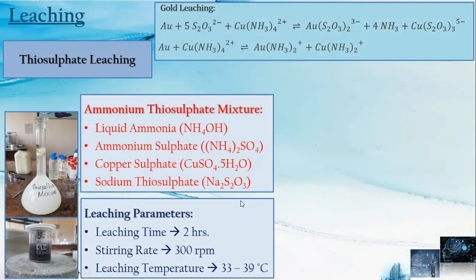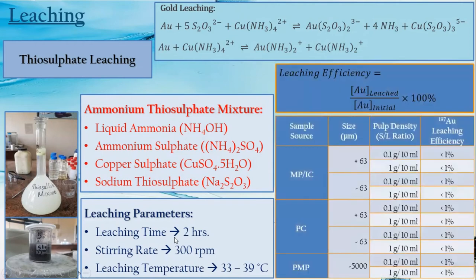Gold leaching was done using an ammonium thiosulfate mixture. The final mixture consisted of 1 M ammonium thiosulfate, 0.5 M ammonium hydroxide, 0.25 M ammonium sulfate, and 10 mM copper sulfate. Ammonium hydroxide was used to stabilize the thiosulfate complex, and copper sulfate was used as a catalyst. The leaching parameters were limited to these values due to time constraints and laboratory facility limitations caused by the COVID-19 pandemic. After ICP-MS analysis, leaching efficiencies were calculated and all efficiencies were below 1%.